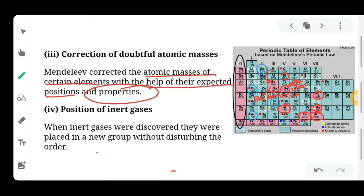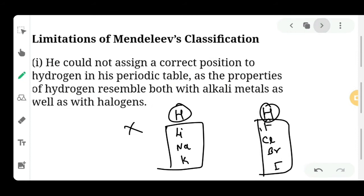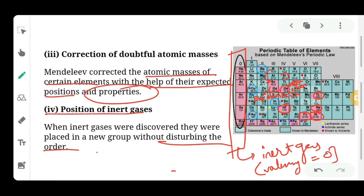Whenever the position and property of an element was found, Mendeleev changed the atomic mass accordingly. Lastly, he also fixed the position of inert gases in a separate group — group zero — where all inert gases with valency zero are placed, without disturbing the existing order. These were the four features — characteristics or merits — of Mendeleev's periodic table.